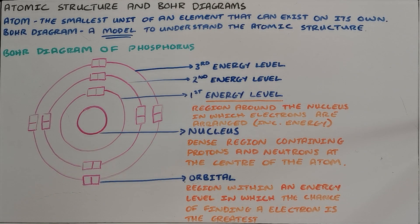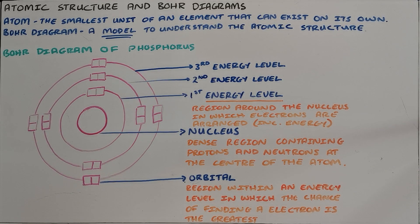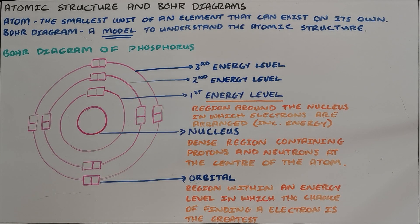An atom is the smallest unit of an element that can exist on its own. Atoms are made up of three subatomic particles. They are subatomic because they are smaller than the atom.